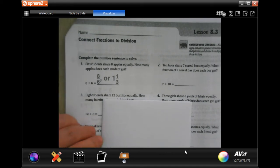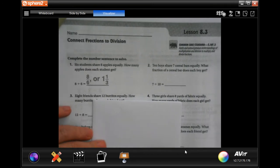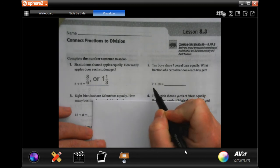Hey y'all, welcome to fifth grade chapter eight lesson three. We're going to go ahead and get started with number two. It says that ten boys share seven cereal bars equally. There's more boys than there are cereal bars.